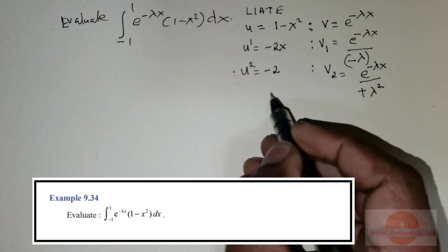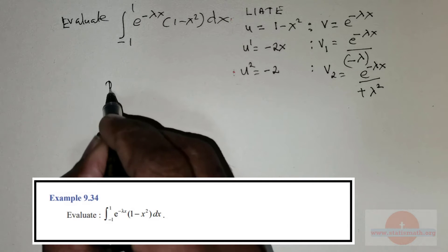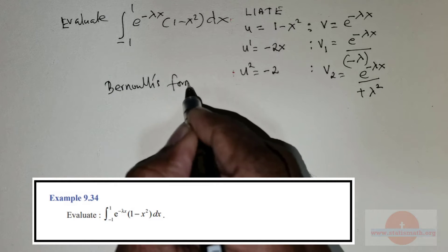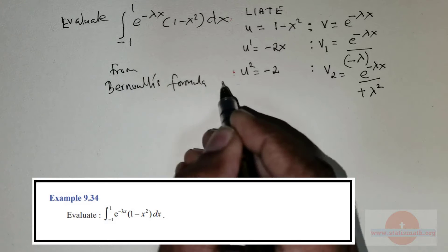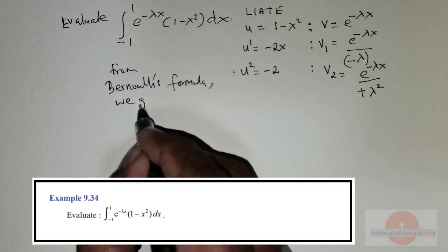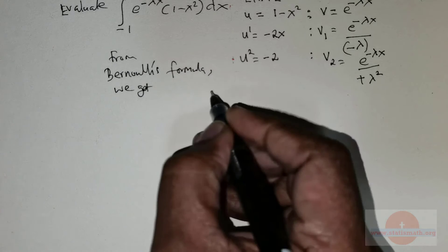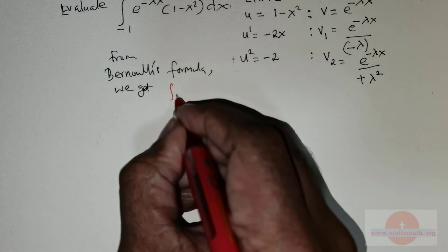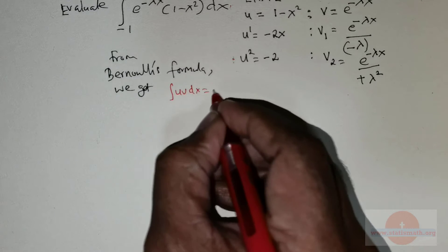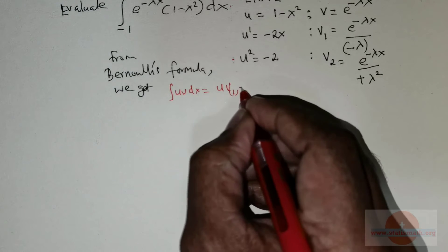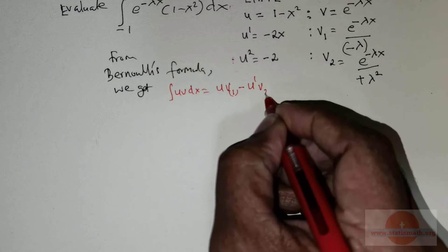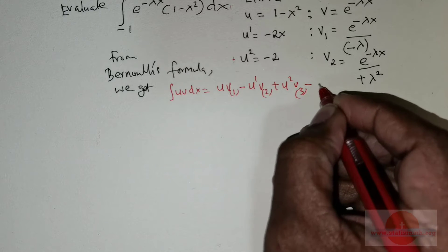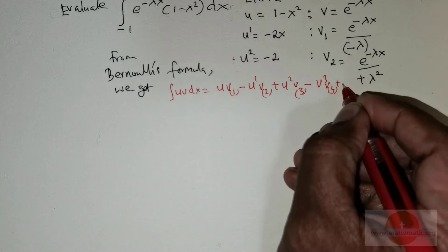Now, having obtained these values, we will use Bernoulli's formula. So let us write the statement of Bernoulli's formula. We know that the integral of uv dx equals u·v₁ minus u₁·v₂ plus u₂·v₃ minus u₃·v₄ and so on. This is Bernoulli's formula.